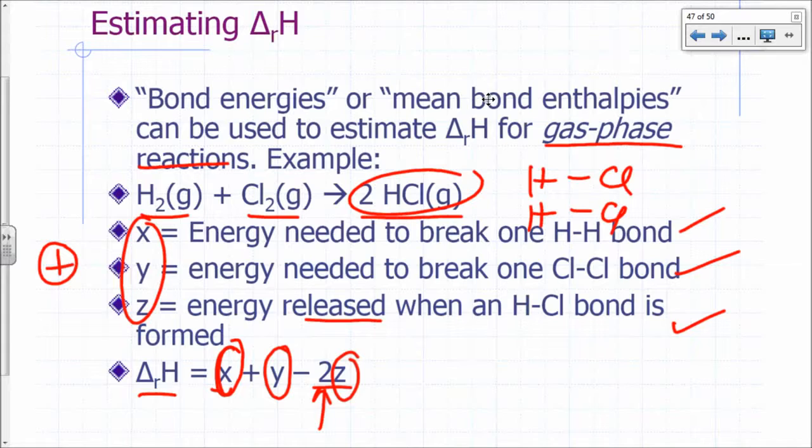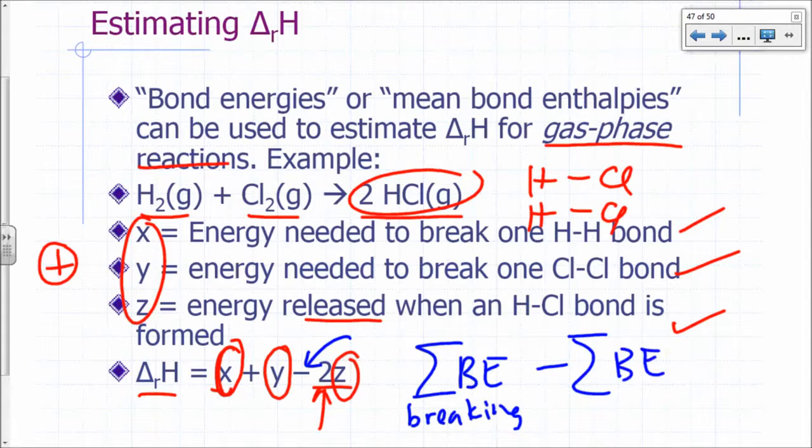So there's a negative there because bond formation is exothermic. So it's really just the sum of the bond energies for dissociation, for bond breaking, right? Sum of the bond energies for breaking bonds minus the sum of the bond energies associated with the bonds that are formed. So bond formation.